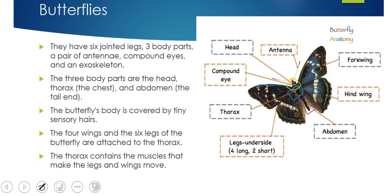Here is one wing, here's the other wing, and these are called the four wings because they're at the front. Then we have the two back wings, or hind wings, and you can't see the legs because they are underneath, but they're all attached to the thorax because the thorax contains the muscles that make the legs and wings move. Nothing is attached to the abdomen, and the only thing on the head is the two antennae and the eyes.